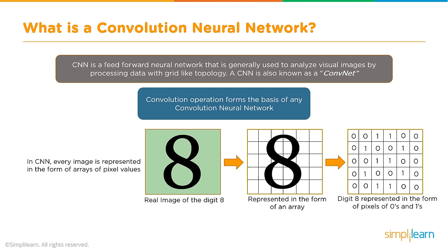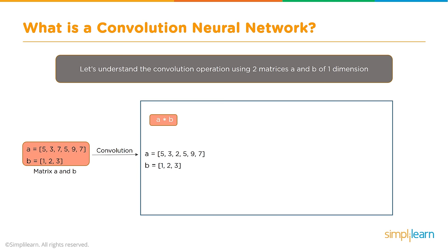What separates the CNN from other neural networks is the convolutional operation, which forms the basis of any convolutional neural network. In a CNN, every image is represented in the form of arrays of pixel values. Here we have a real image of the digit eight, which gets put into its pixel values as a two-dimensional array. We transform the digit eight into zeros and ones — ones representing the black parts and zeros representing the white background.